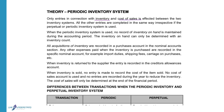When the periodic inventory system is used, no record of inventory on hand is maintained during the year. The only way to determine how much inventory they have on hand is by doing an inventory count. Even if the business wants to know mid-year, they will have to do a count, because they don't use the inventory account to balance and determine how much inventory should be on hand.